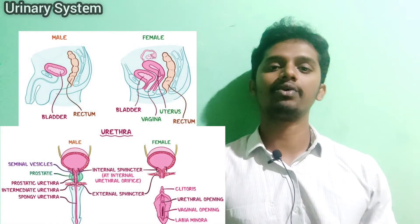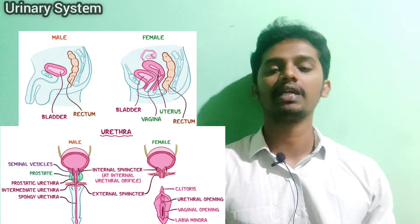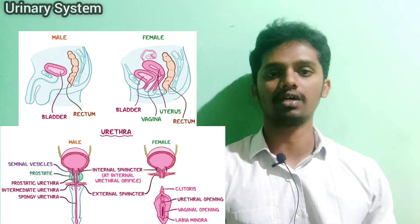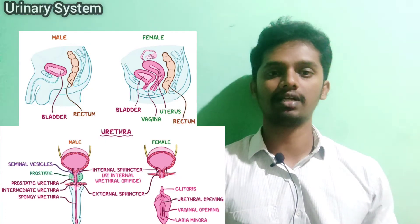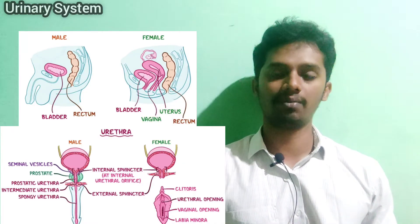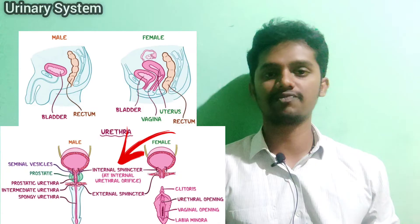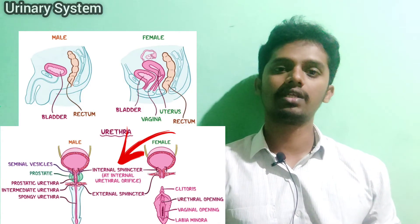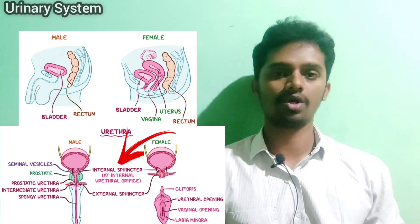Anatomy of the urethra. The urethra is the final part of the urinary system through which urine exits the body. The male urethra is different from the female urethra in length: the male urethra is about 20 cm long, while the female urethra is about 3 cm long, due to the difference in reproductive organ structure. The urethra has an internal urethral sphincter muscle, which opens to allow urine to flow and closes afterward. This is the anatomy of the urethra.